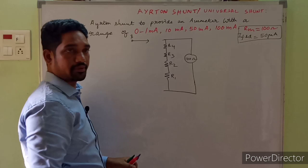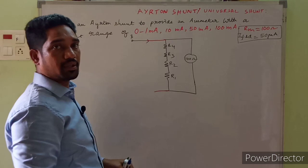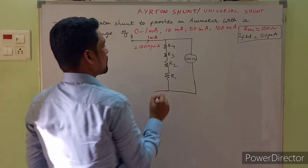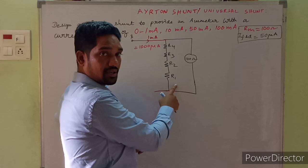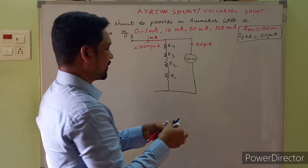For the first range, 0 to 1 milli ampere, the switch is connected at this position. When 1 milli ampere flows, that equals 1000 micro amperes total. We must select the total resistance R4 + R3 + R2 + R1 such that it allows 50 micro amperes to pass through the basic meter after this node.